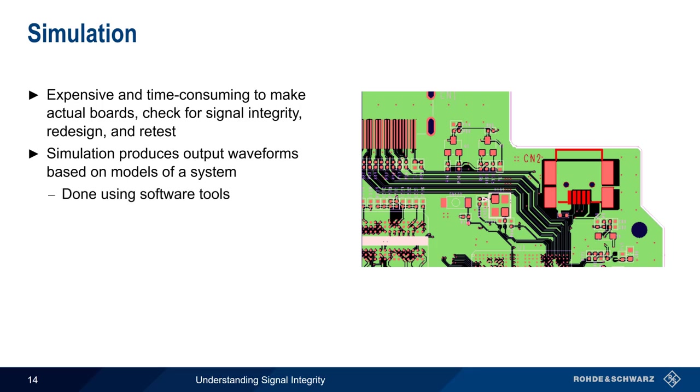Simulation is used to produce output waveforms based on models of a system or system components. It's performed using special software tools, in part because the calculations would be much too complex to do by hand. The output waveforms are calculated using models of frequency-dependent behavior. Simulation therefore helps us to make good design decisions and reduces the probability of signal integrity issues.